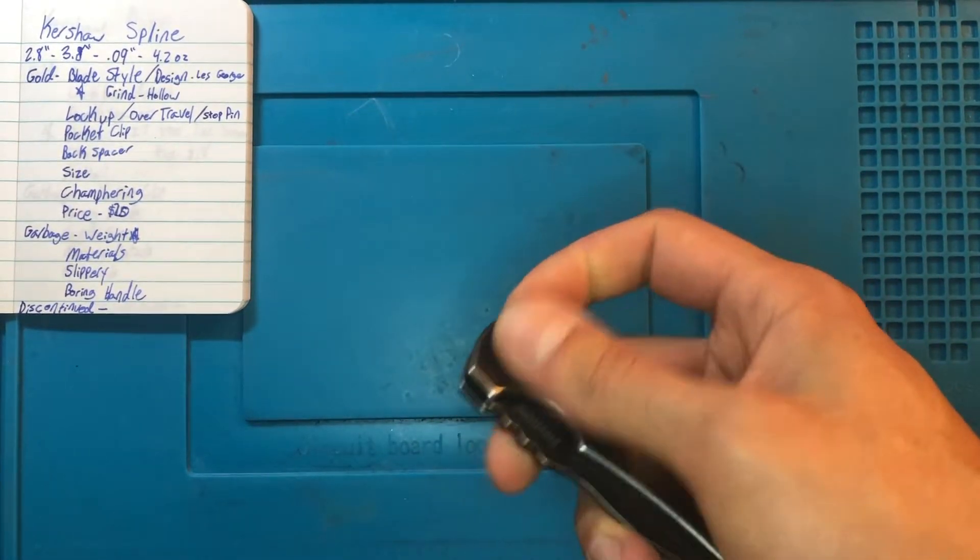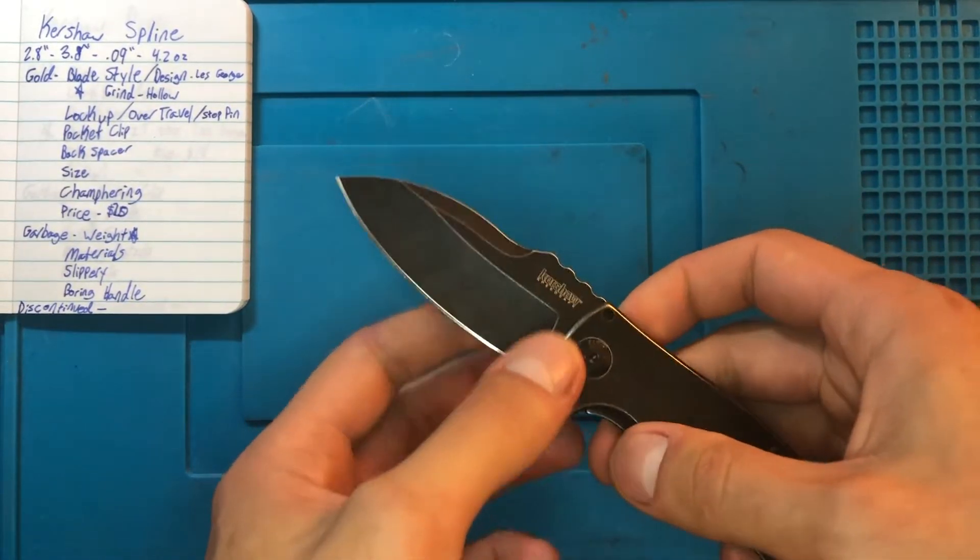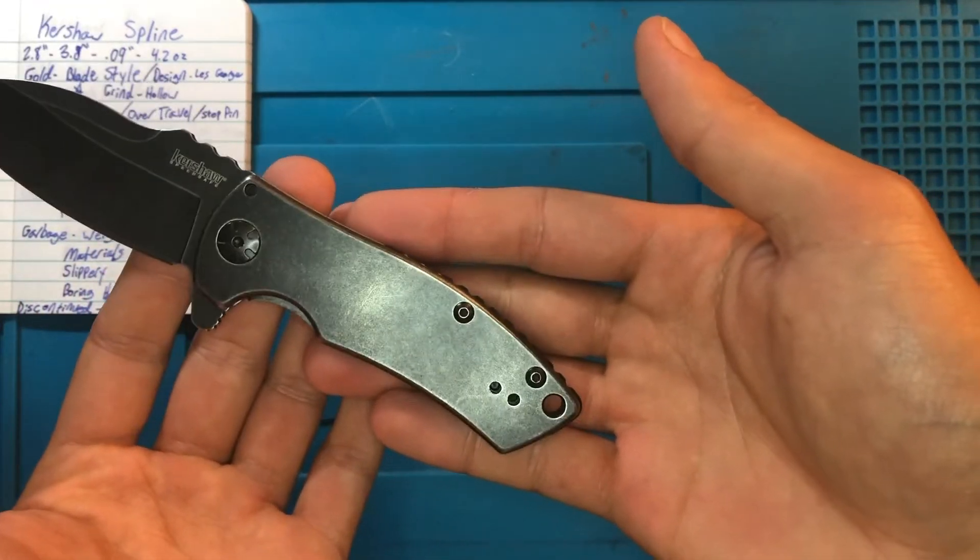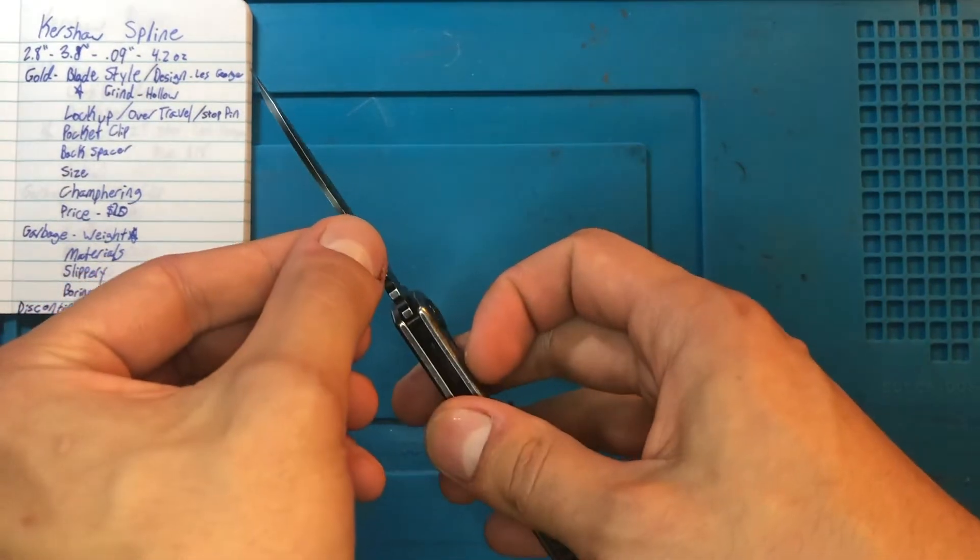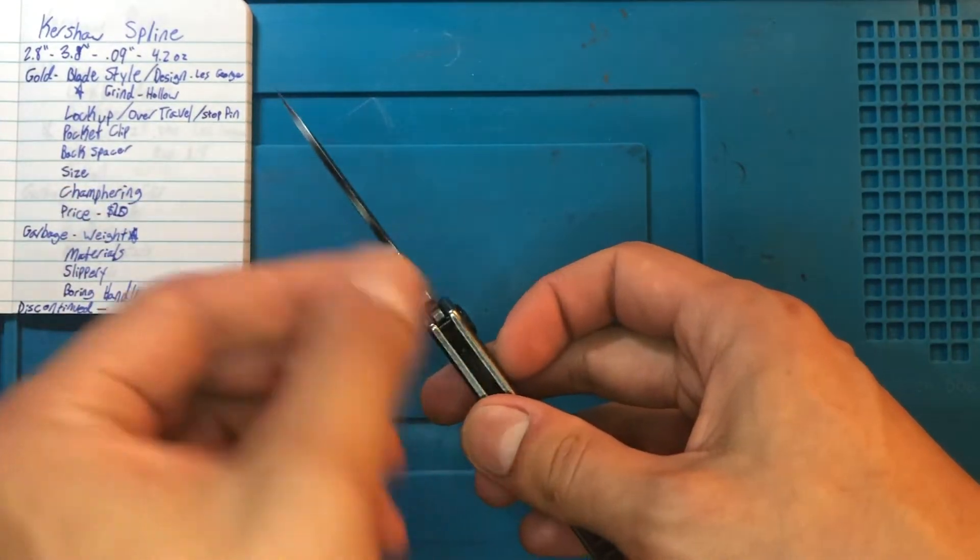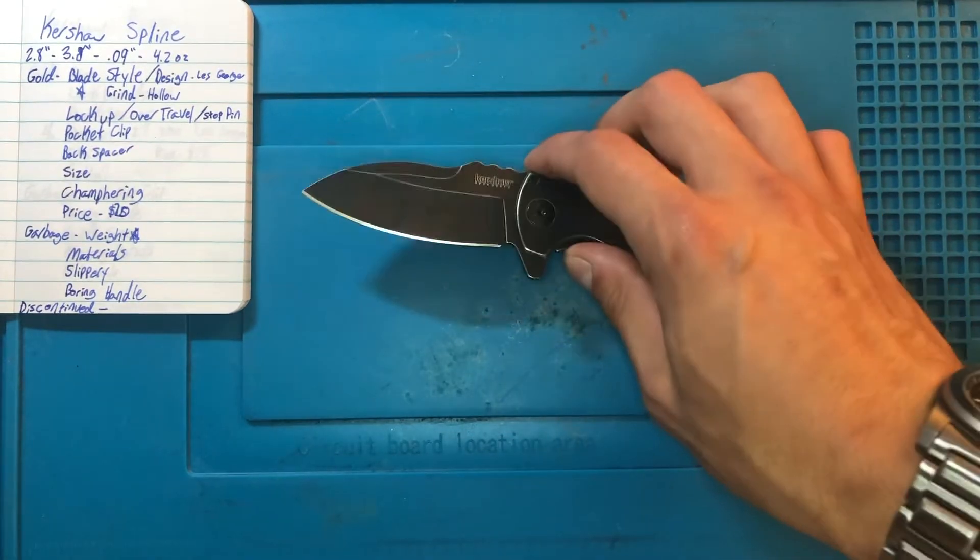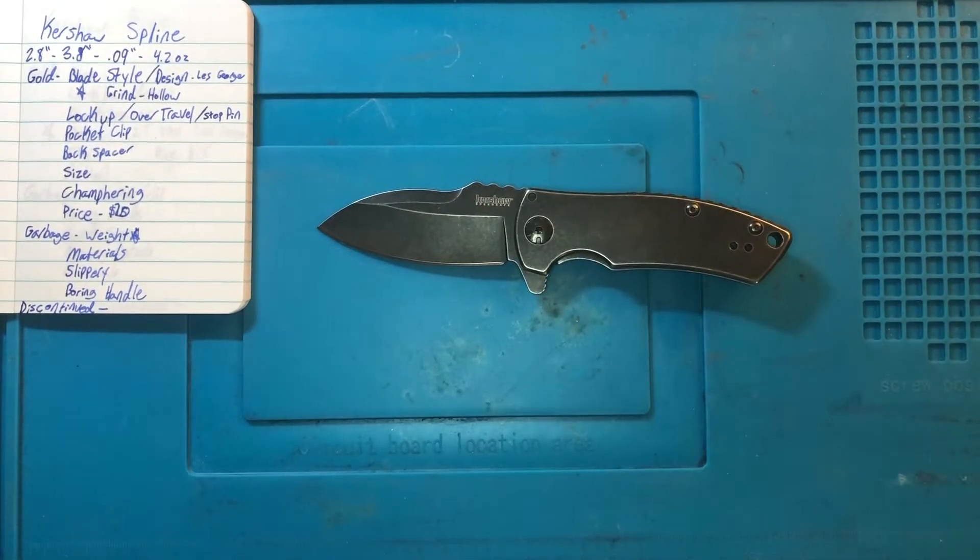This little buddy is coming in with a blade of 2.8 inches, a handle length of 3.8 inches, a blade thickness, stock thickness of 0.09 inches, and a weight of 4.2. And don't worry we'll come back and cover all of that very soon.